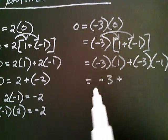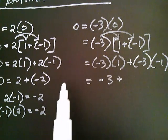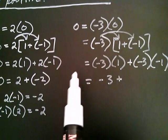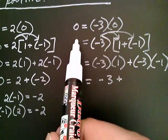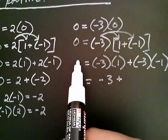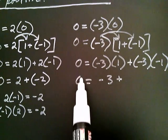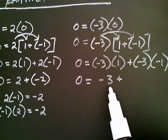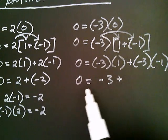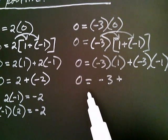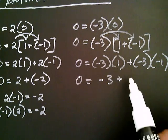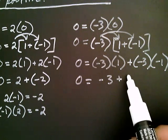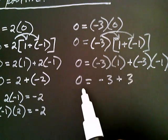Just like before, the left-hand side was always zero — so this is zero, that hasn't changed, this is zero, and this is zero. So I'm asking: negative three plus what must give zero? The answer is positive three — negative three added to three gives zero.